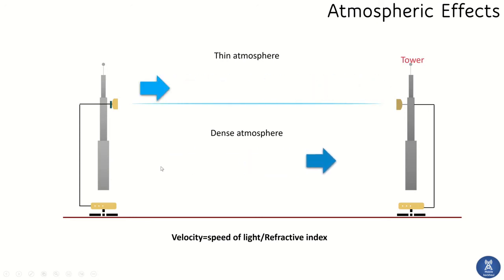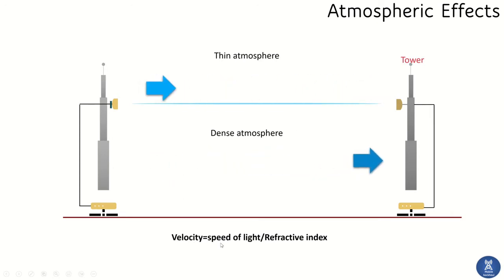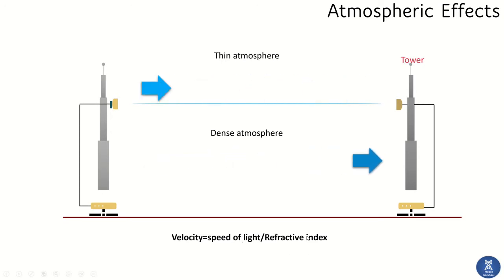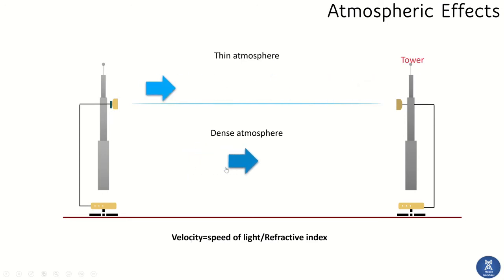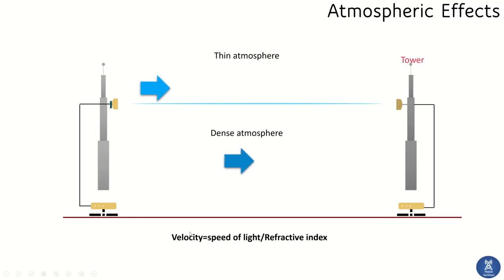The reason for this behavior is the electromagnetic wave velocity formula: velocity equals the speed of light divided by the refractive index. The speed of light is 3×10⁸ meters per second, which is always constant. So the only parameter that changes is the refractive index. For dense atmosphere the refractive index is very high, so velocity is very low; for thin atmosphere the refractive index is very low, so velocity is very fast.